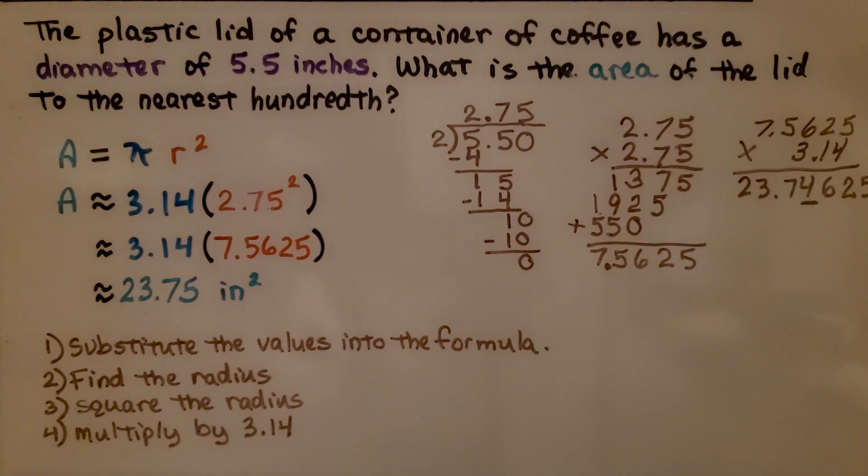So we substitute the values into the formula, finding the radius. We squared the radius and we multiply by 3.14. And we know that the plastic lid of that coffee container has an area of 23.75 inches squared.